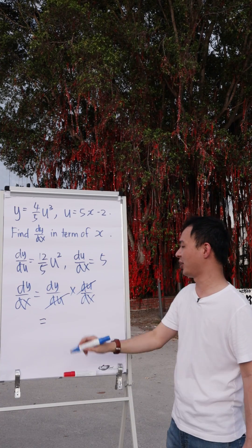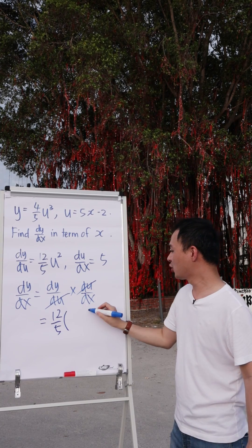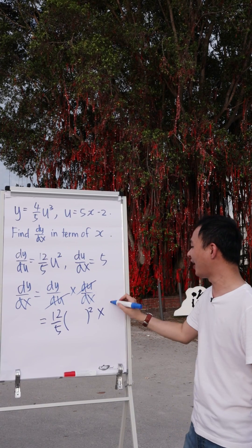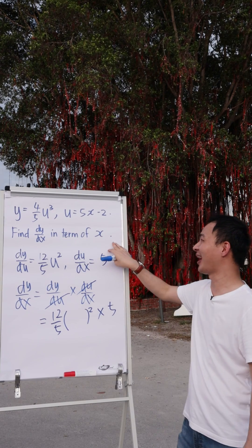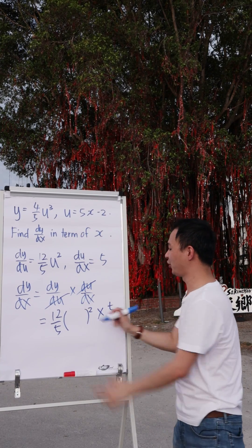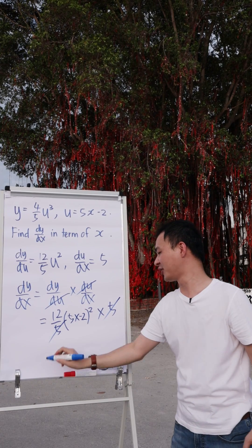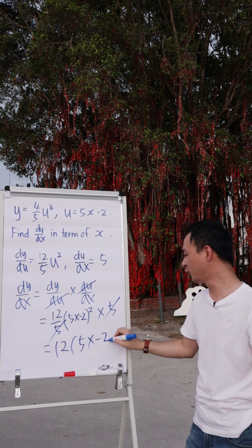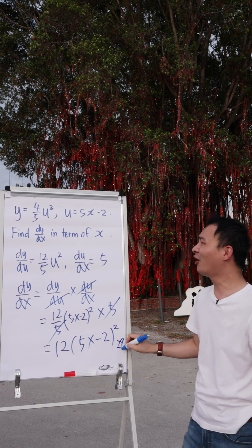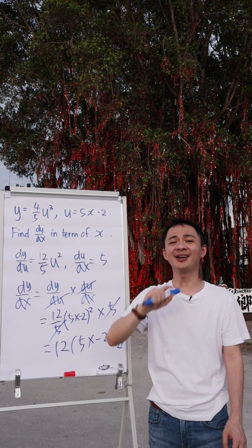So therefore, you just insert the thing into here, which is 12 over 5, u square, multiply with 5. And you realize that I don't write u here, why? Because the question wants it in terms of x. So what I want to do here is I will plug the u back into here, which is 5x minus 2. And then 5 and 5 I will simplify. My final answer is just 12 multiply (5x minus 2) to the power of 2. This is how easy we solve this question and connect between y and u to get the dy/dx.